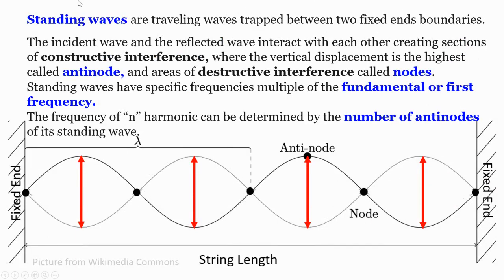In conclusion, standing waves are traveling waves trapped between two fixed-end boundaries. The incident wave and reflected wave interact, creating antinodes — areas of constructive interference with the highest vertical displacement — and nodes — areas of destructive interference with no motion. Standing waves have specific frequencies that are multiples of the fundamental or first frequency, and the frequency of the nth harmonic can be determined by the number of antinodes of its standing wave.